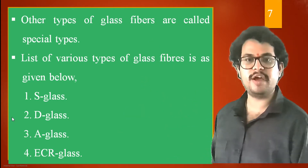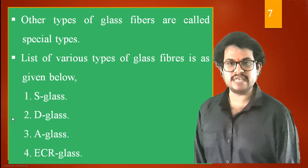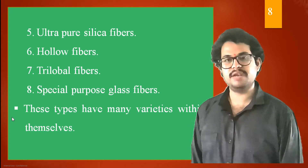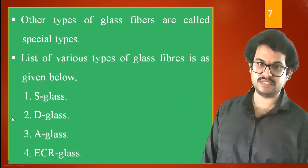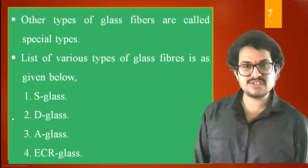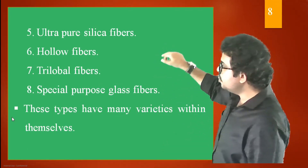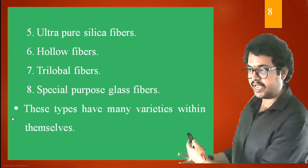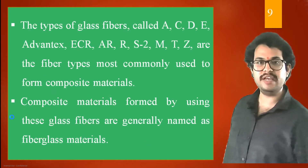Other special types of glass fibers are: S glass fiber, D glass fiber, A glass fiber, ECR glass fiber, ultra pure silica fibers, hollow fibers, and trilobal fibers. These are listed as special purpose glass fibers and they can have different combinations and varieties among themselves.